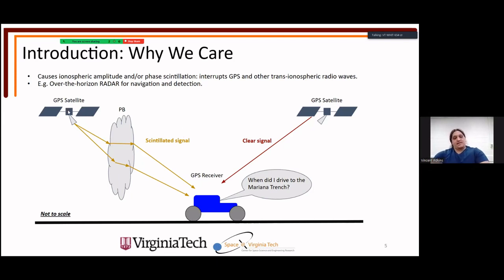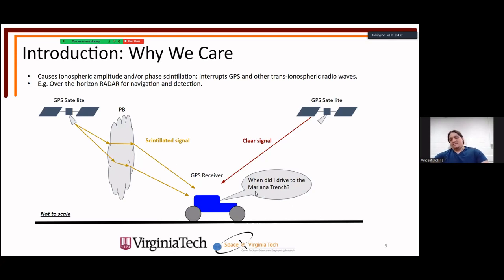The GPS satellite signal passes through a plasma bubble. GPS signals are on the order of centimeters in wavelength. It's not the bulk depletion itself but the small-scale structures on the walls of the plasma depletion that lead to Fresnel and Bragg scattering, causing both amplitude and phase scintillation. There might be times your GPS says you're 50 miles in the wrong direction. The large-scale structure can also interfere with over-the-horizon radar for navigation and detection.